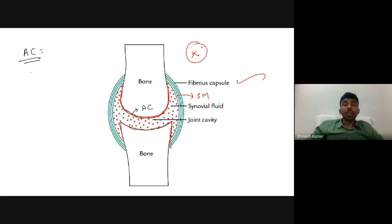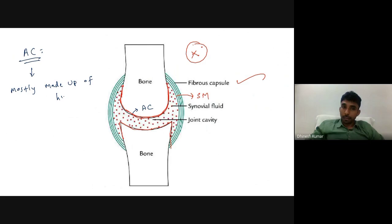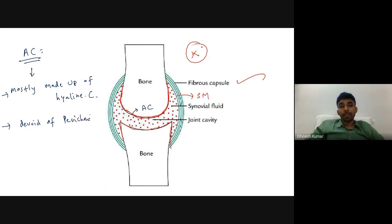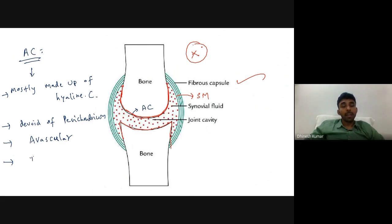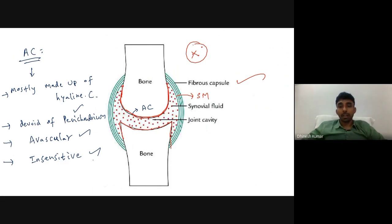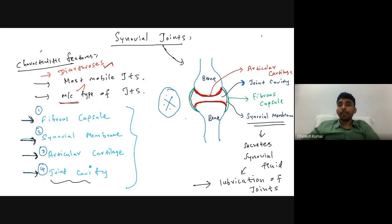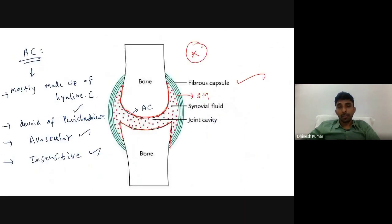The articular cartilage is mostly made up of hyaline cartilage in the majority of synovial joints. This articular cartilage is devoid of perichondrium, devoid of blood supply (avascular), and also devoid of nerve supply (insensitive).